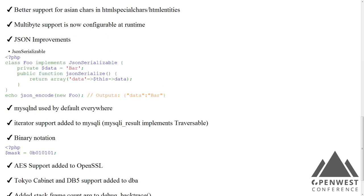We have much better support for Asian characters in special chars and entities now. Also if you're doing multi-byte stuff, before you had to build PHP with multi-byte support at compile time — now you can do that as a configuration option after compile time. There are some JSON improvements — one being a JSON serializable interface that you can implement, providing a JSON serialize method in your object, so if something tries to JSON encode your object you have control over what happens.